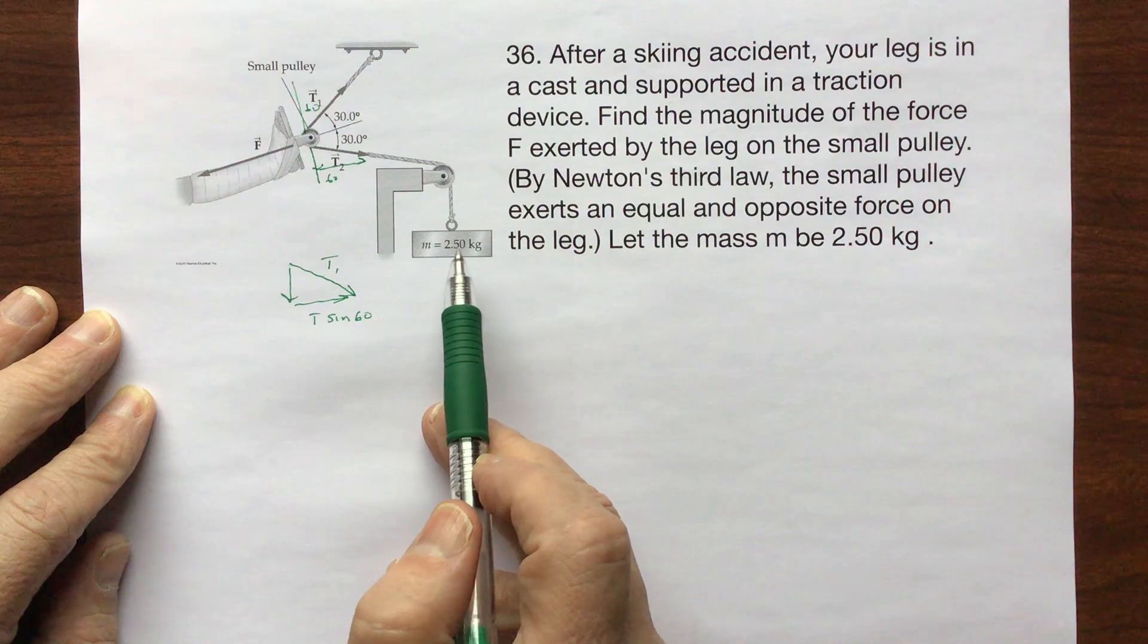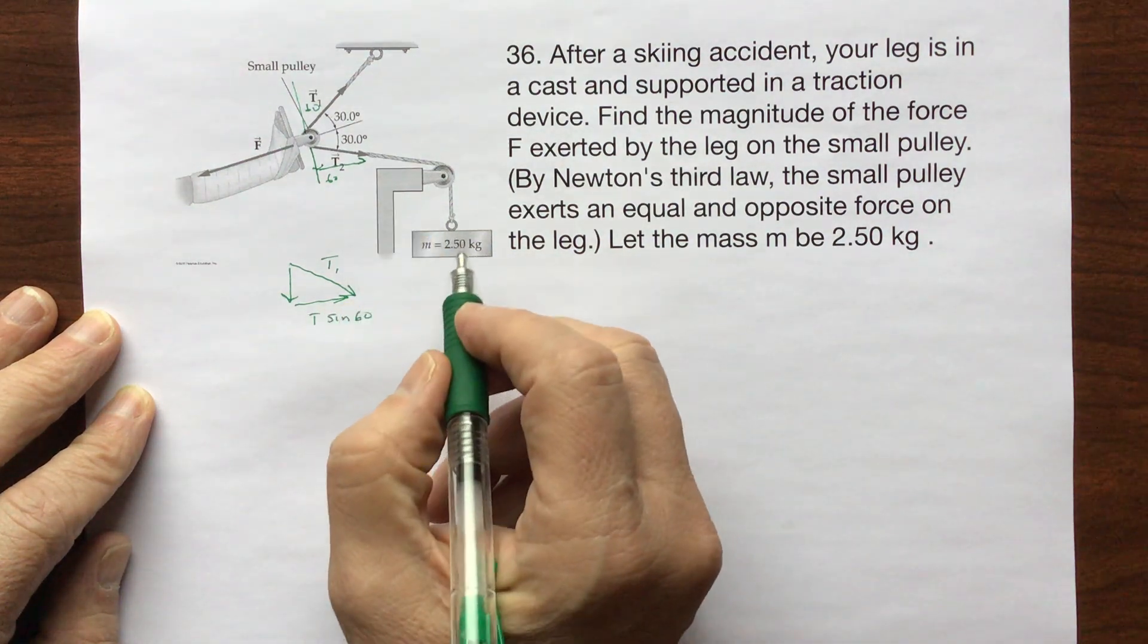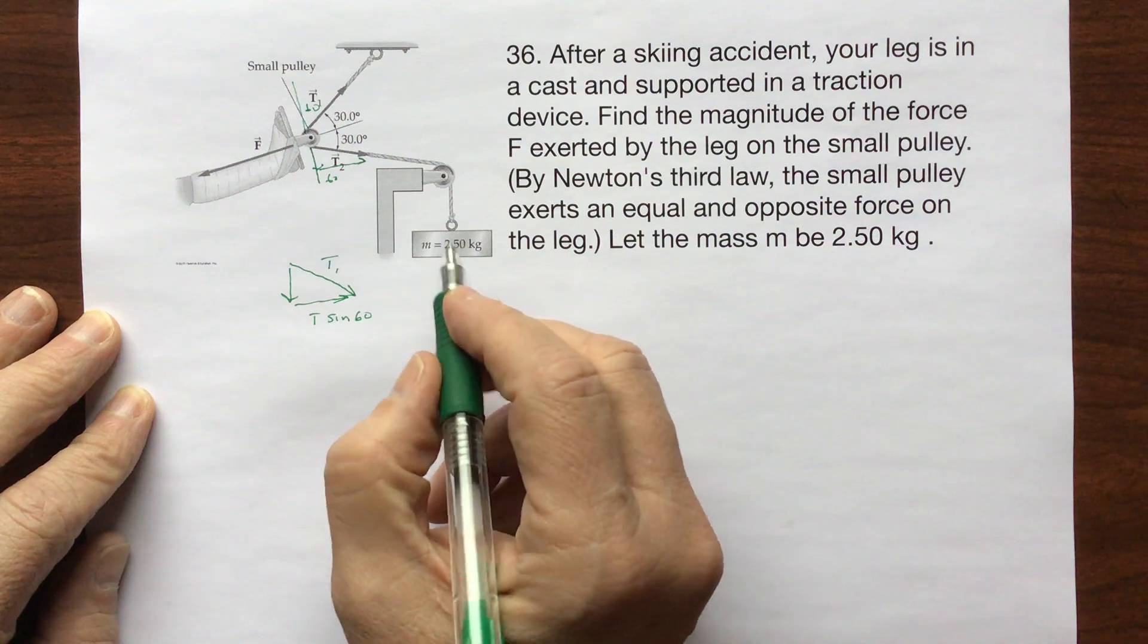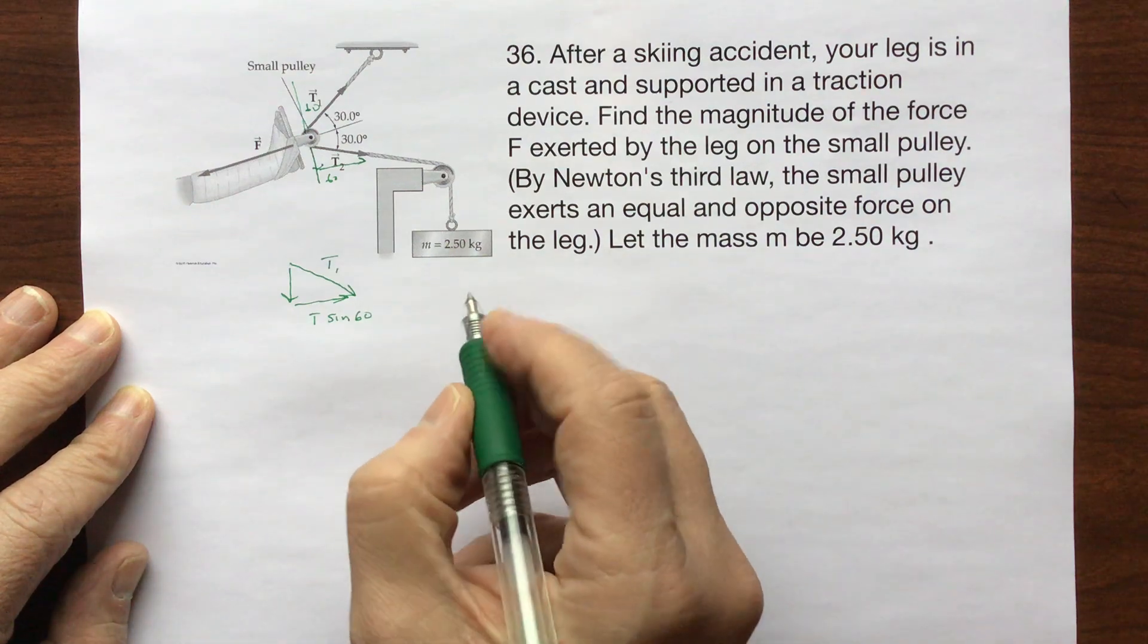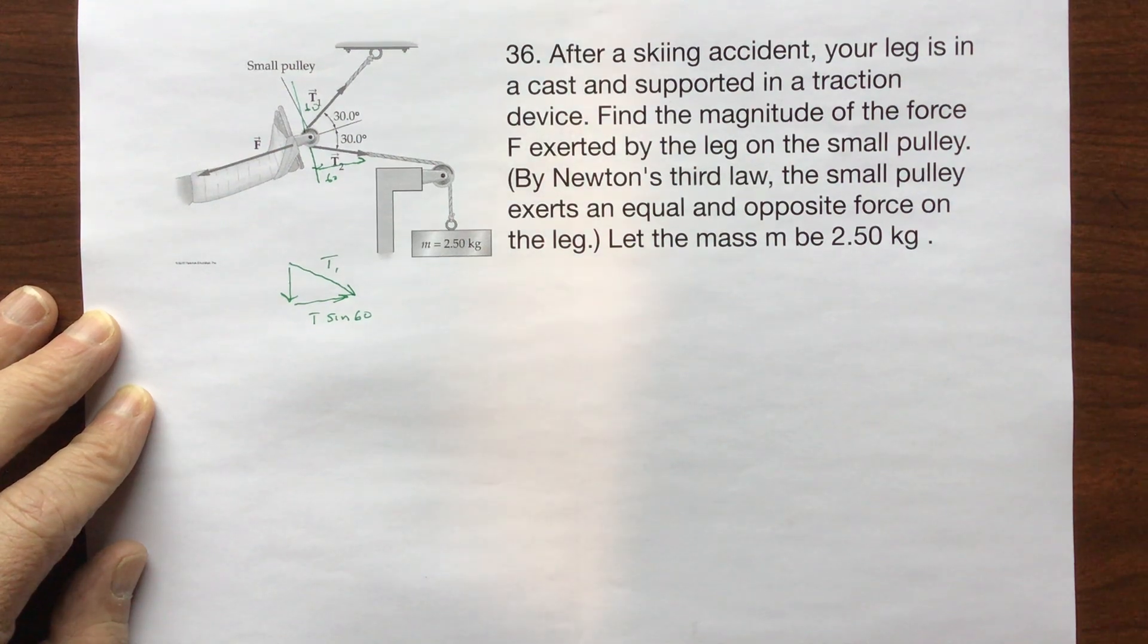T is going to be half of M plus G times G. So I'm going to say half of the 250, so I've got 250 times 9.81.